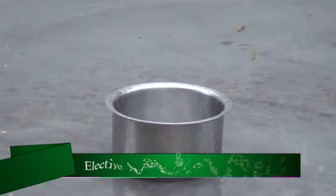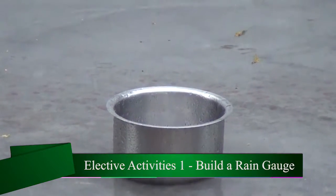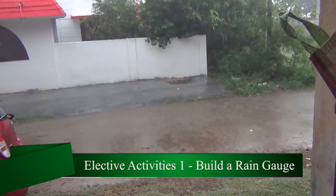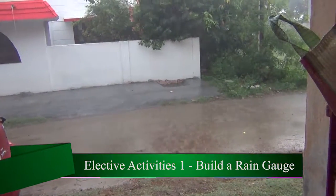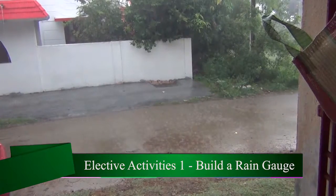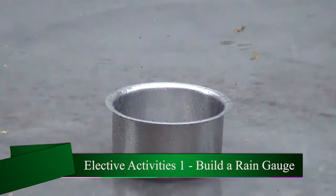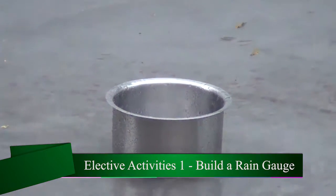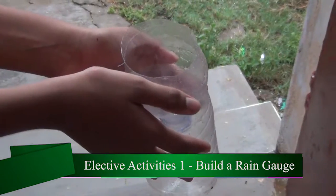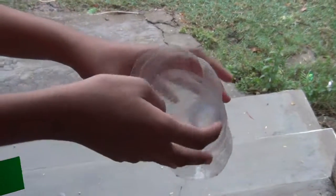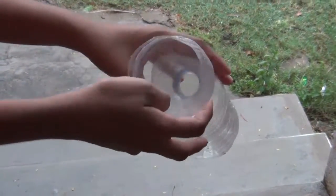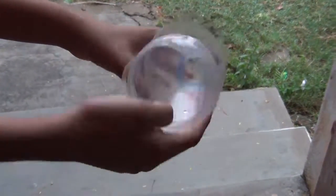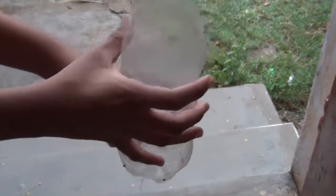Today the weather is very nice and it is raining, so we put our rain gauge on the terrace of this house. This is the plastic rain gauge, but since the wind is very strong we are not able to collect it in the plastic rain gauge.